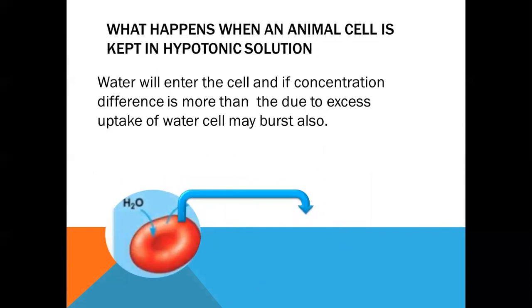Now let us see what is going to happen when an animal cell is kept in a hypotonic solution. The cell that you can see here is RBC. So what is going to happen when this RBC is going to be kept in hypotonic solution? Hypotonic means more water, less solute.